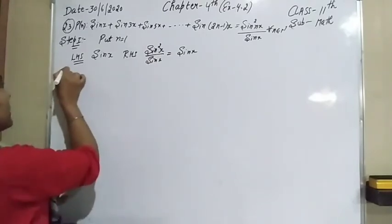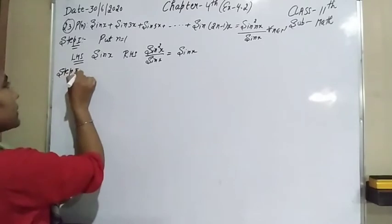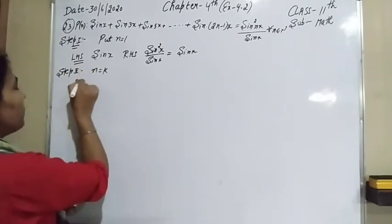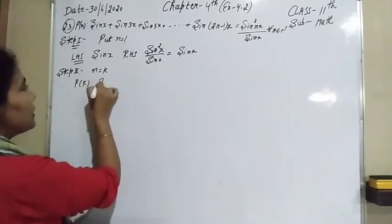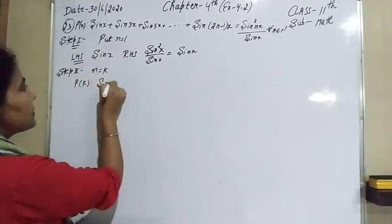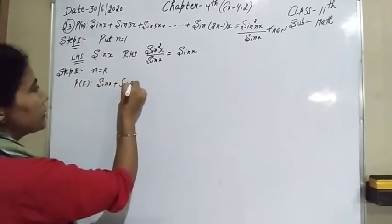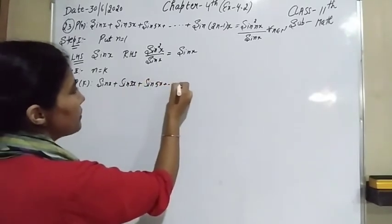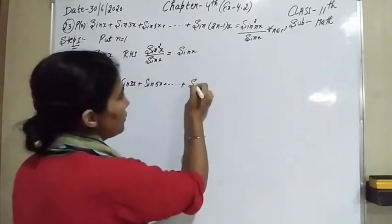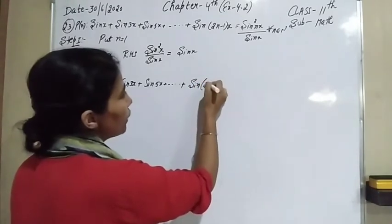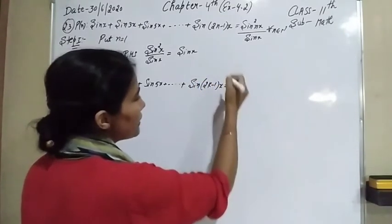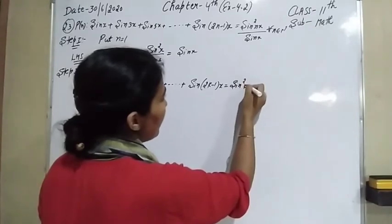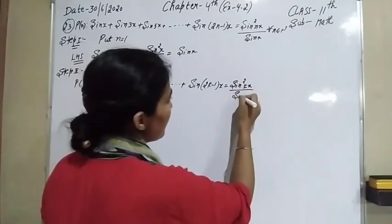In the second step, we assume the result is true for n equal to k. That means P(k) is: sin x plus sin 3x plus sin 5x plus up to sin(2k minus 1)x equals sin squared(kx) over sin x. That statement is already assumed true.